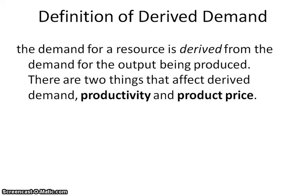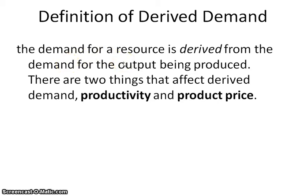When we're talking about the definition of derived demand, we're talking about the demand for a resource being derived from the demand for the output being produced — from the product that's being produced. If the demand for a product is increasing, then the demand for the resource is going to also increase. If the demand for the product is decreasing, then you're not going to need as many workers in order to make it, and so that's going to affect the demand for it.